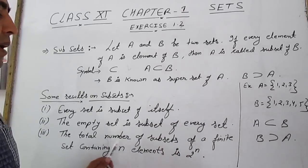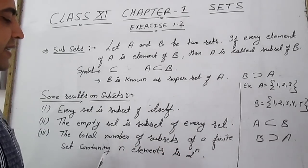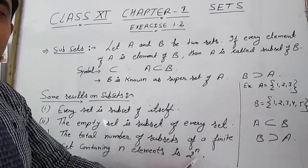Third, the total number of subsets of a finite set containing N elements is 2 raised to the power N.